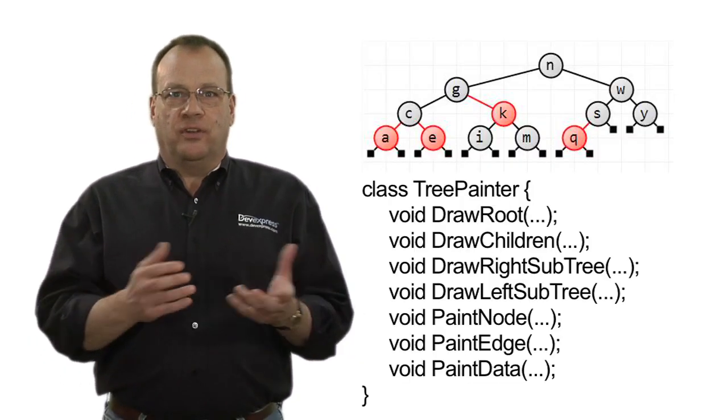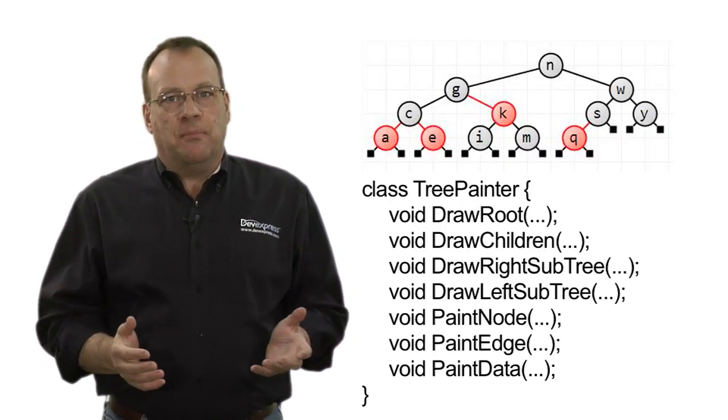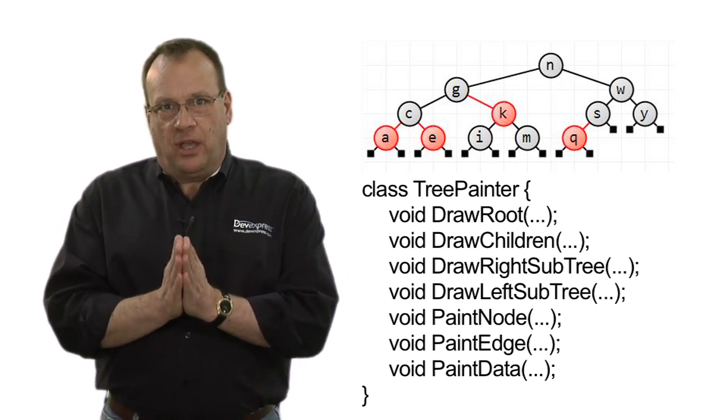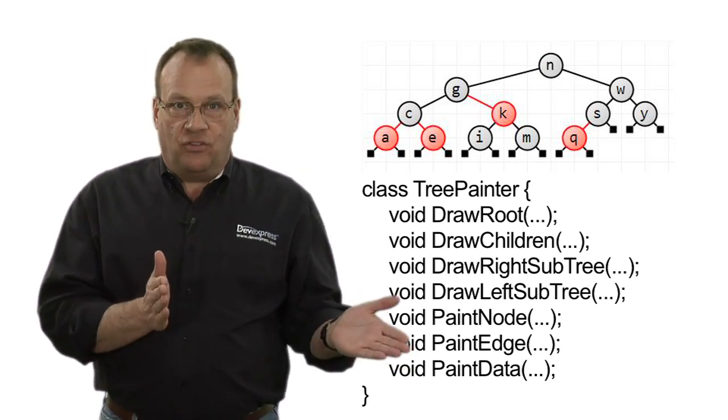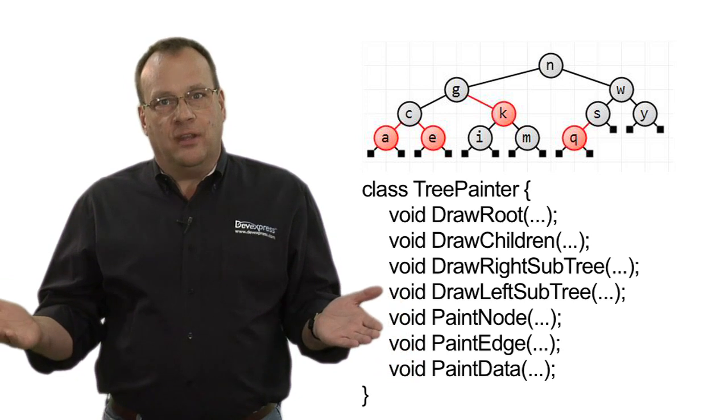Now back to my example binary tree painting code I'm using to discuss these principles. If you remember from last time, I split the tree painting code into code that navigated the tree, and code that painted the nodes and edges.